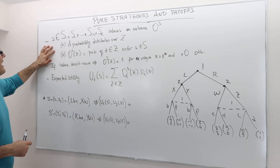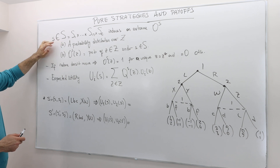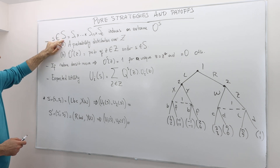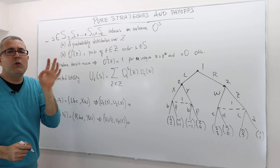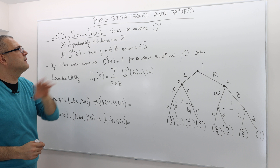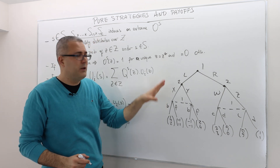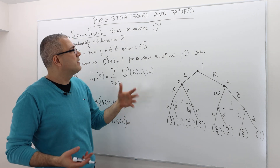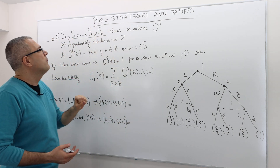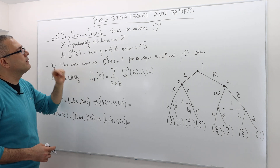Let's take some arbitrary pure strategy profile, small s, which is an element of capital S. Capital S is the Cartesian product of all the players' strategy spaces, including nature. In the example we were talking about, nature doesn't move, so you can ignore it. But in general, you can incorporate nature as well.